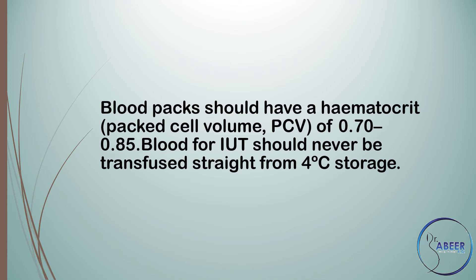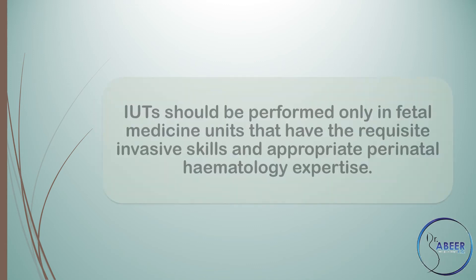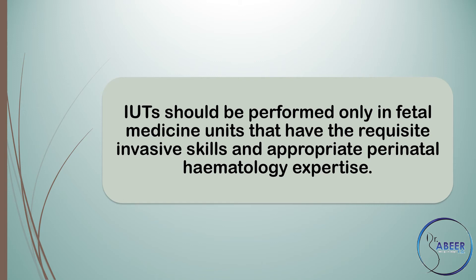K-negative blood is recommended to reduce additional maternal alloimmunization risk. It should also be less than 5 days old, in citrate phosphate dextrose (CPD) anticoagulant, CMV-negative, irradiated, and transfused within 24 hours of irradiation. Blood packs should have a packed cell volume (PCV) of 0.70 to 0.85. Blood for IUT should never be transfused straight from 4°C storage, and intrauterine transfusions should be performed only in fetal medicine units with requisite invasive skills and appropriate perinatal hematology expertise.